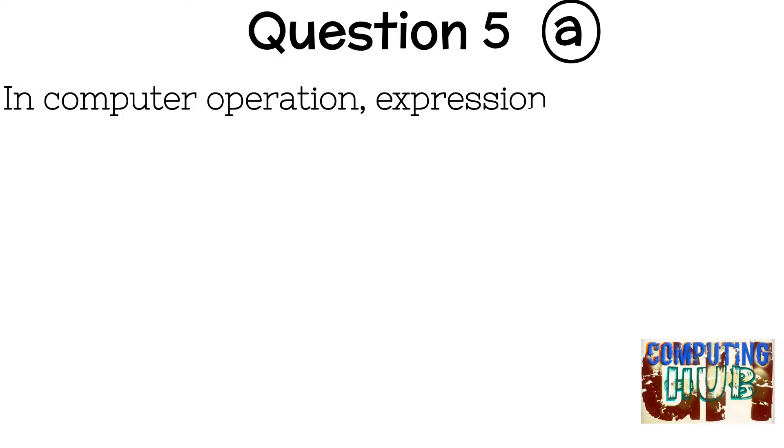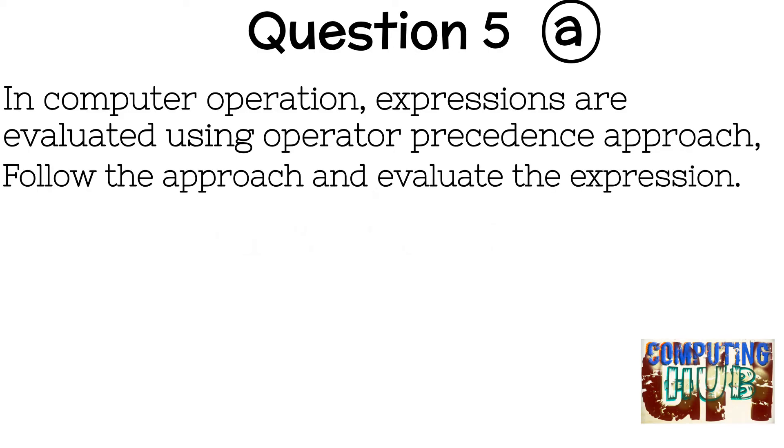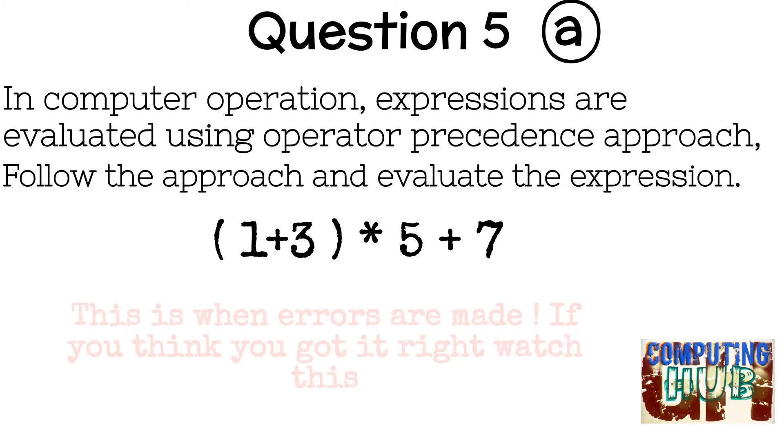The question is: in computer operation, expressions are evaluated using operator precedence approach. Follow the approach and evaluate the expression (1+3) * 5 + 7, and the times is represented with the asterisk sign. You can simply get this wrong if you think you know.